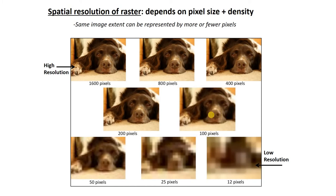A couple of things to know about rasters — one is the idea of spatial resolution. Spatial resolution depends on the size and density of the pixels. If you have an image made up of more pixels, you're going to see more detail. Here's a photograph of a dog made from 1600 pixels — that's high resolution, we see the dog very well. The same picture comprised of only 12 pixels per row gives very low resolution; we can hardly tell it's a dog.